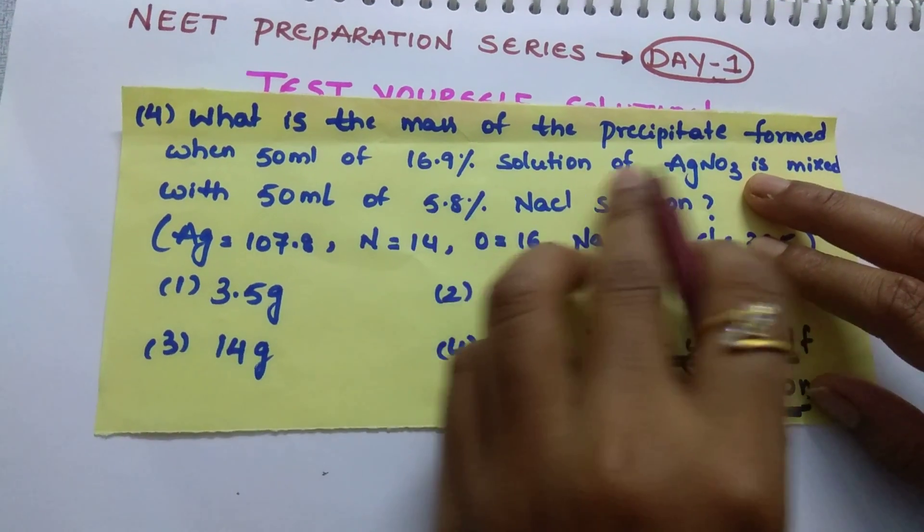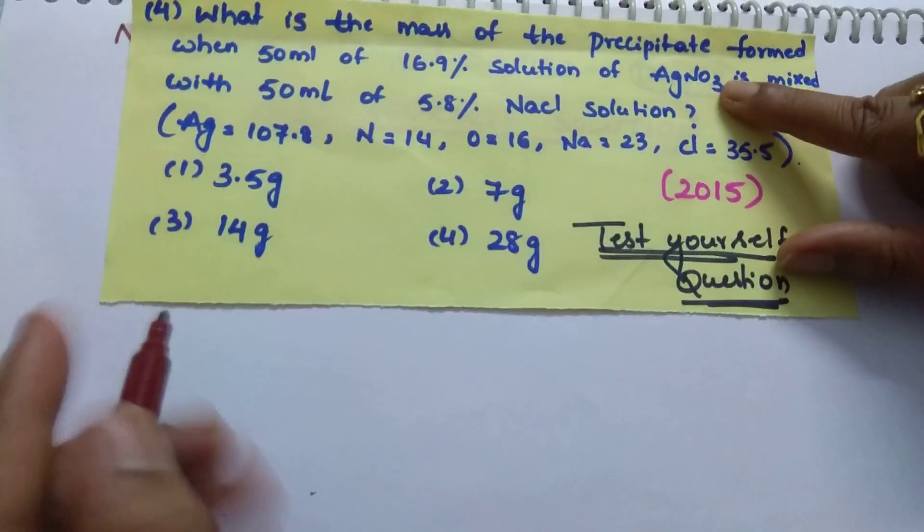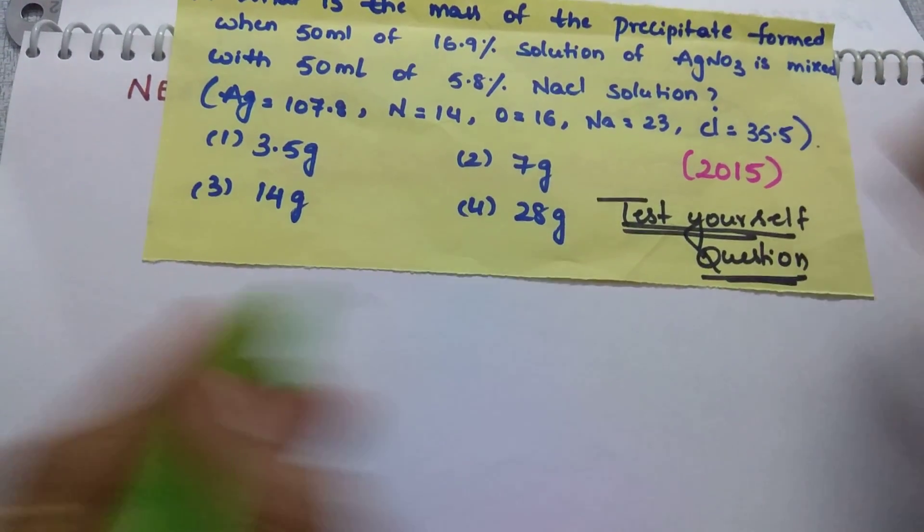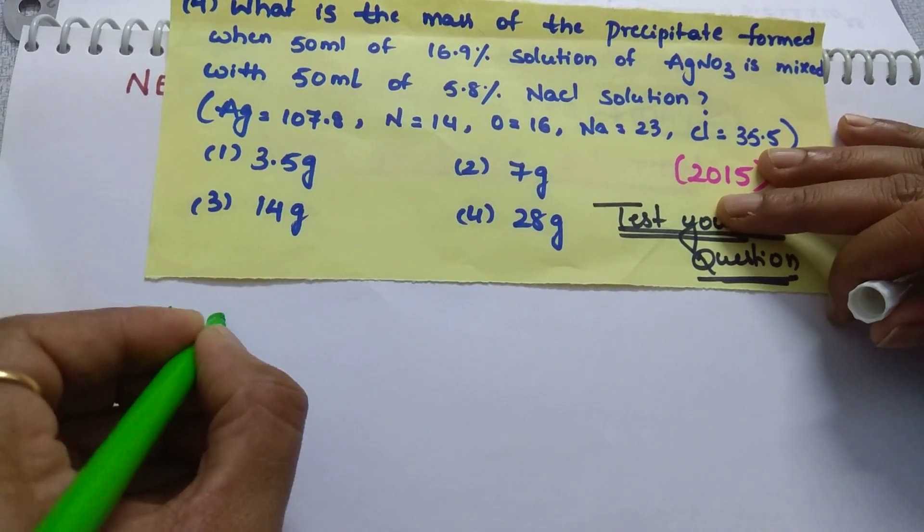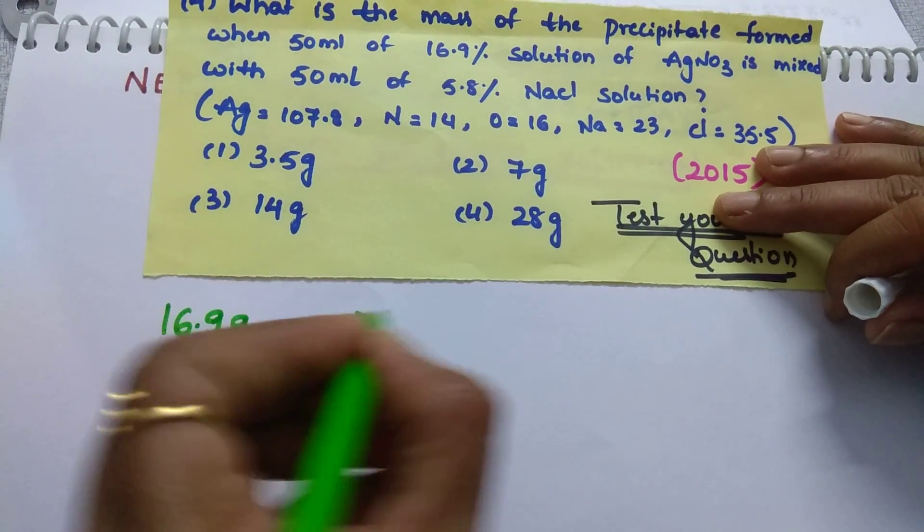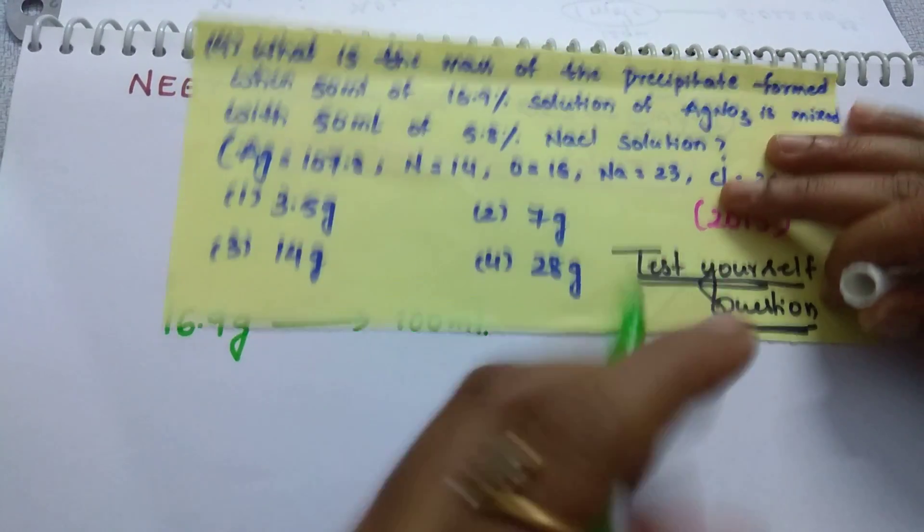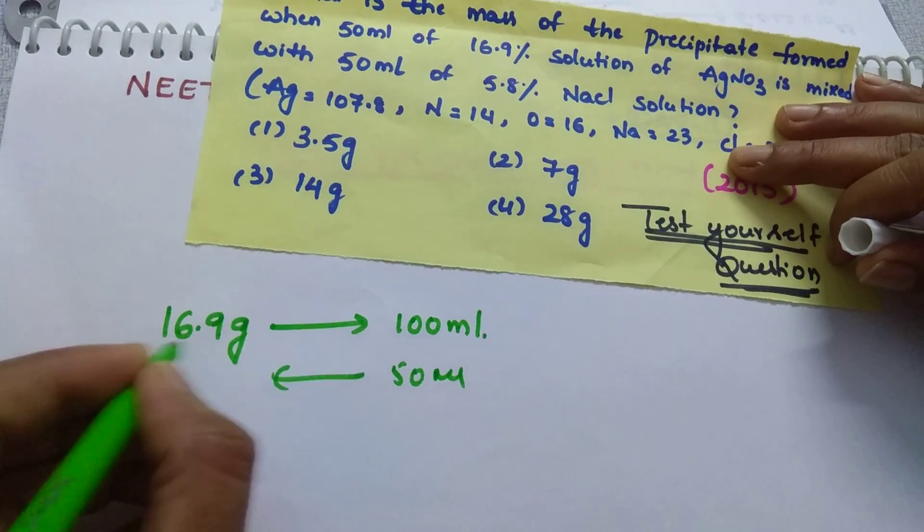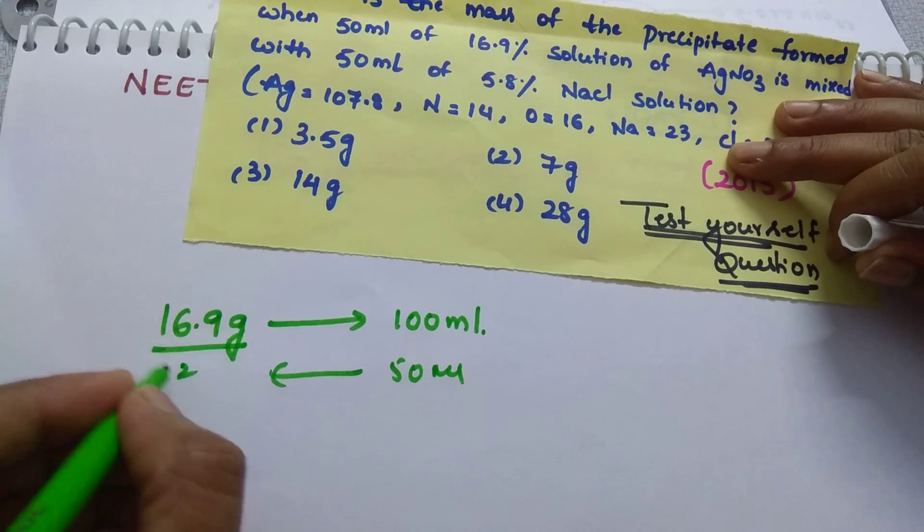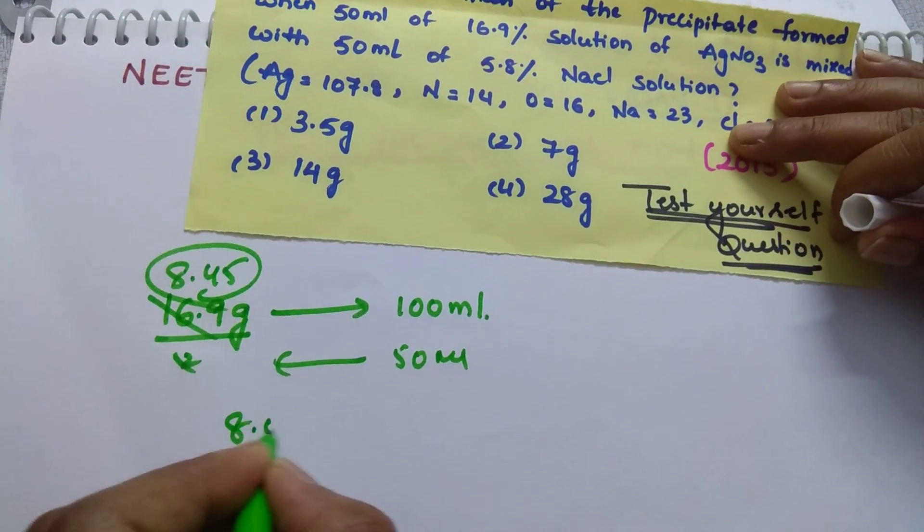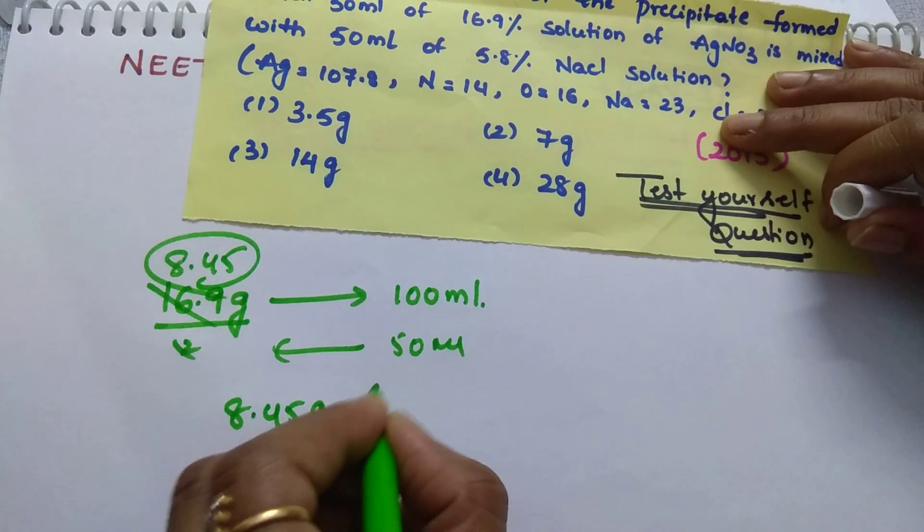16.9% solution of AgNO3. What it means? It means that 16.9 gram of AgNO3 is present in 100 ml. Then 50 ml how much students? Exactly half. Then how much you will get? 8.45 gram of AgNO3.